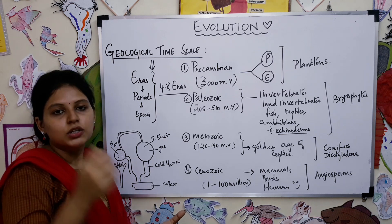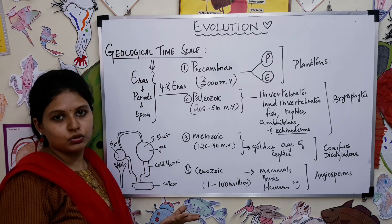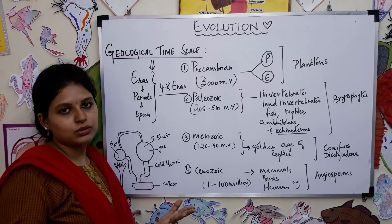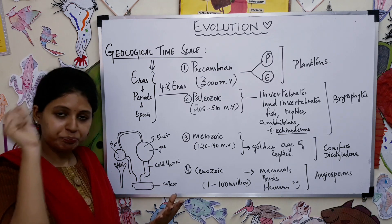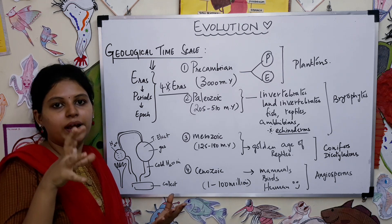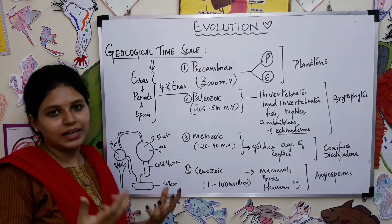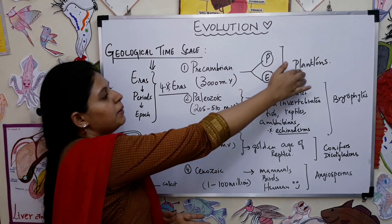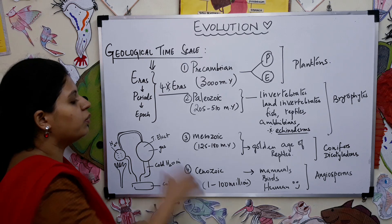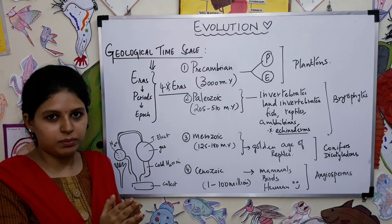Planktons are very small organisms which you can view under the microscope; they are all motile organelles. Planktons are an important tag for evolution in the Pre-Cambrian era. Whatever is written on the whiteboard covers the important events and the one-mark questions for this era.